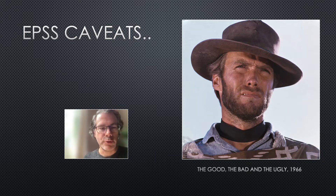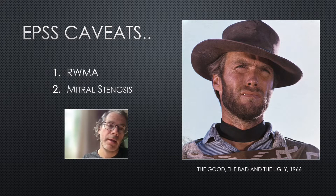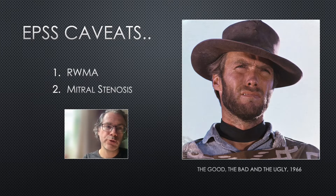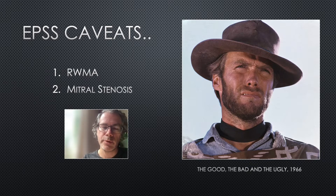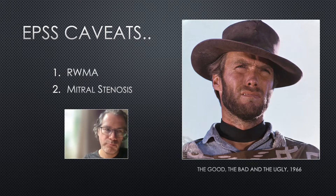There are a couple of caveats to EPSS: if there's a regional wall motion abnormality or mitral stenosis it may not be reliable, but in the vast majority of patients it's a very useful measure that augments the eyeball method nicely. With experience you can also just eyeball EPSS — if the anterior leaflet is clearly slapping into the septum it's normal; if there's a massive gap it's definitely abnormal. If it's borderline, use M-mode with a cutoff of seven millimeters.